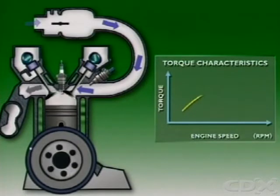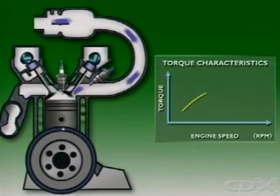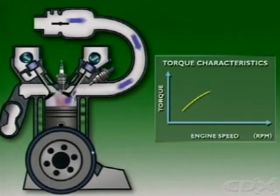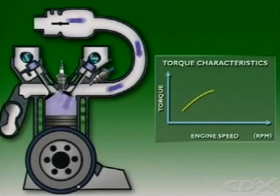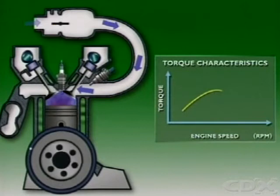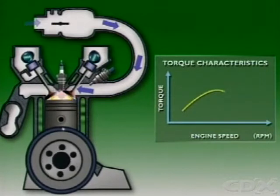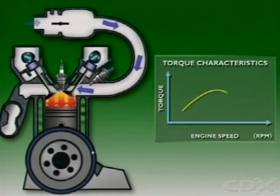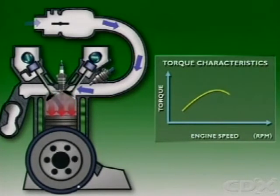It's this density of the air-fuel mixture that determines how much pressure develops in the cylinder during combustion and the level of thrust on the piston to turn the crankshaft.